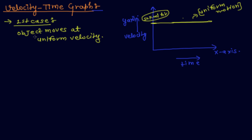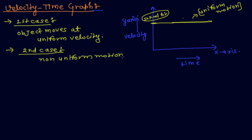Now the second case: non-uniform motion. Non-uniform motion means velocity is variable.